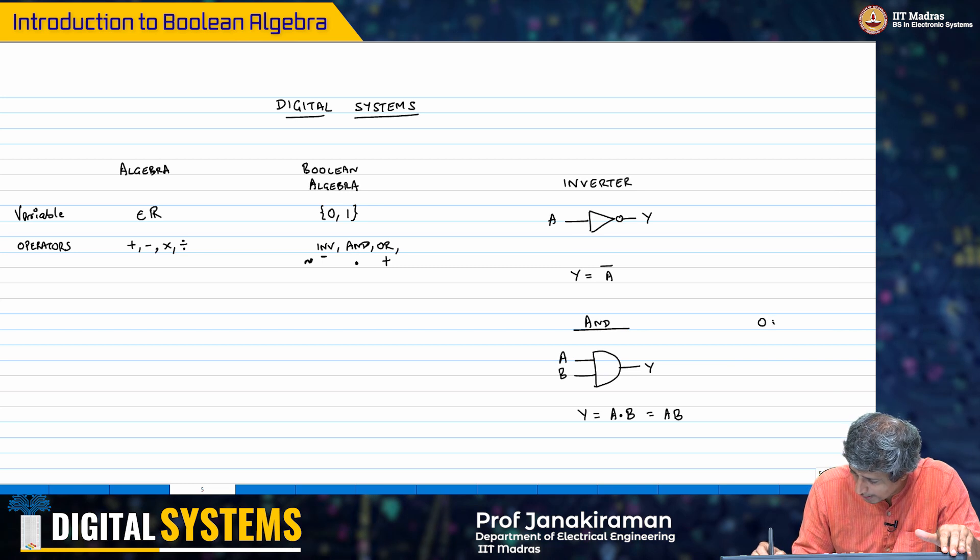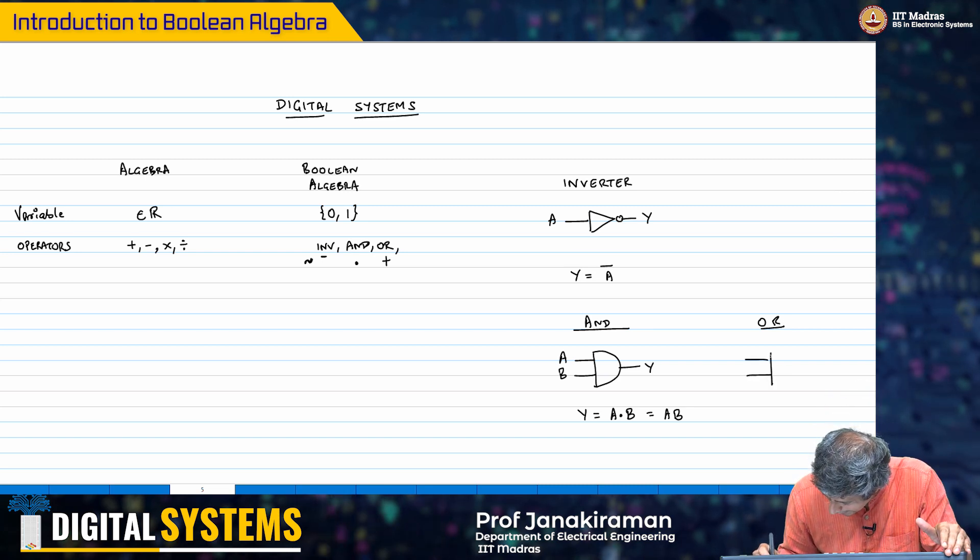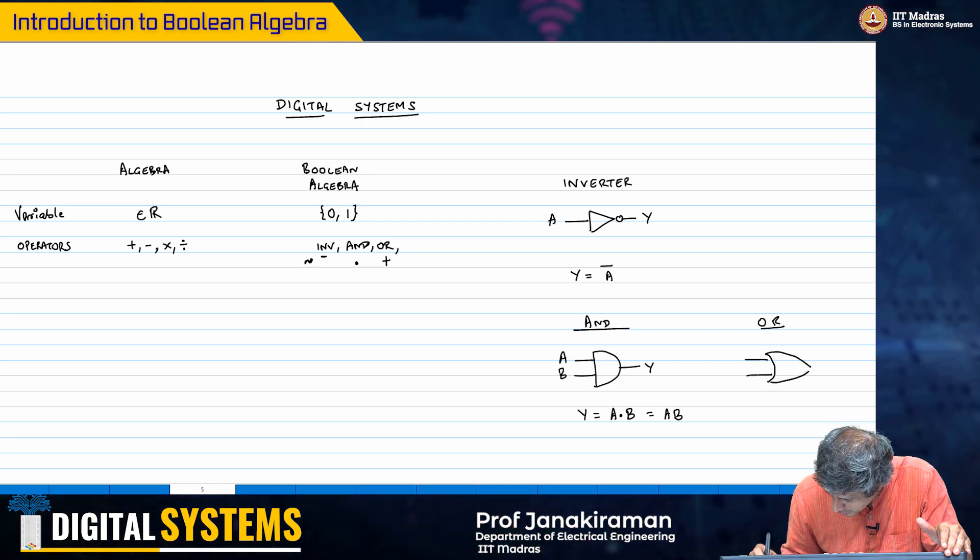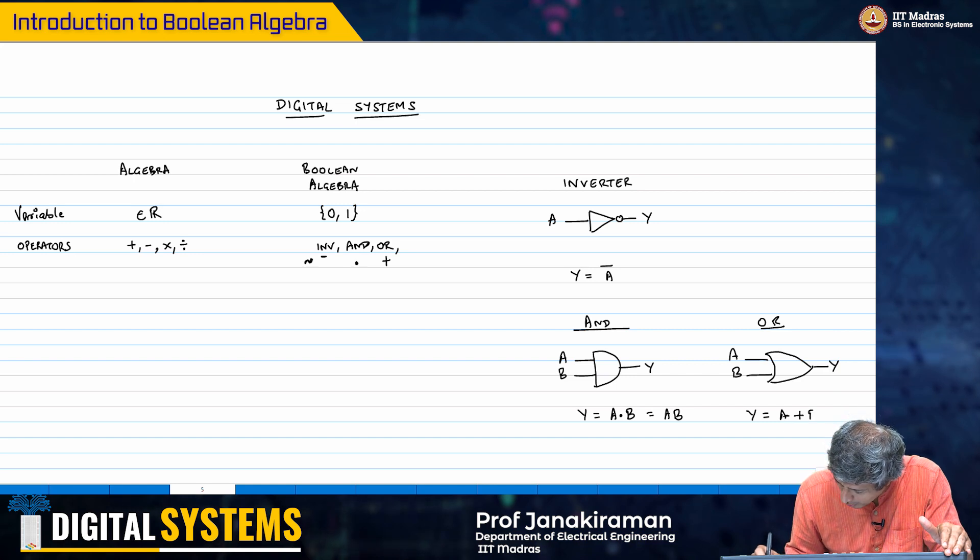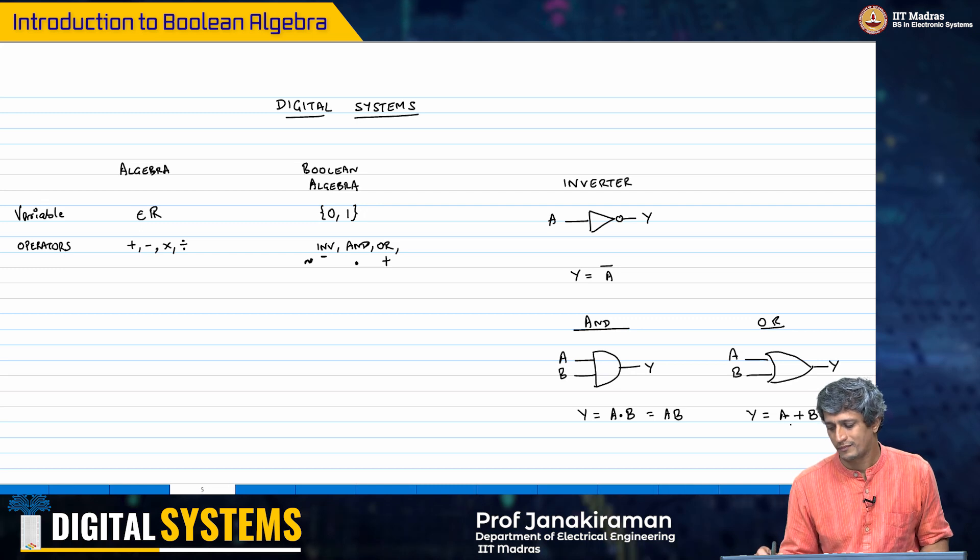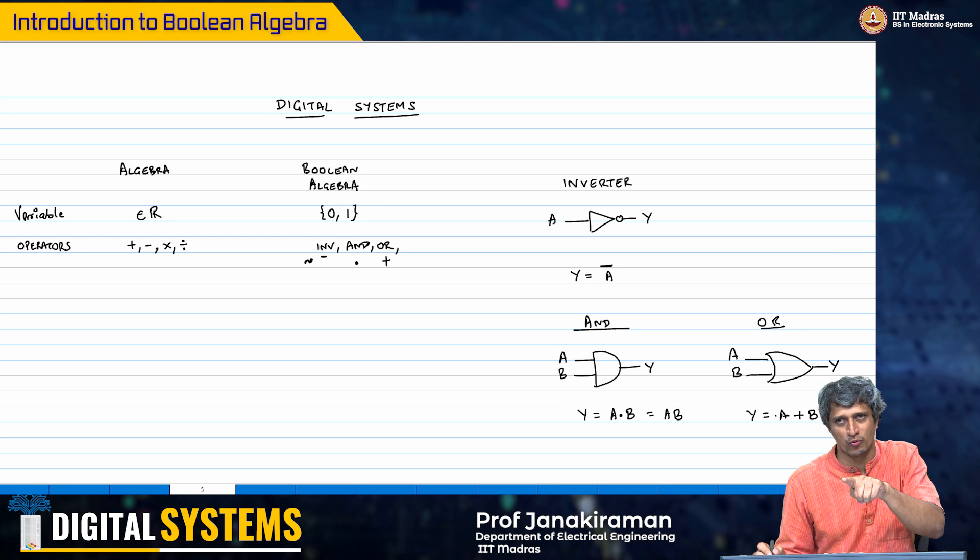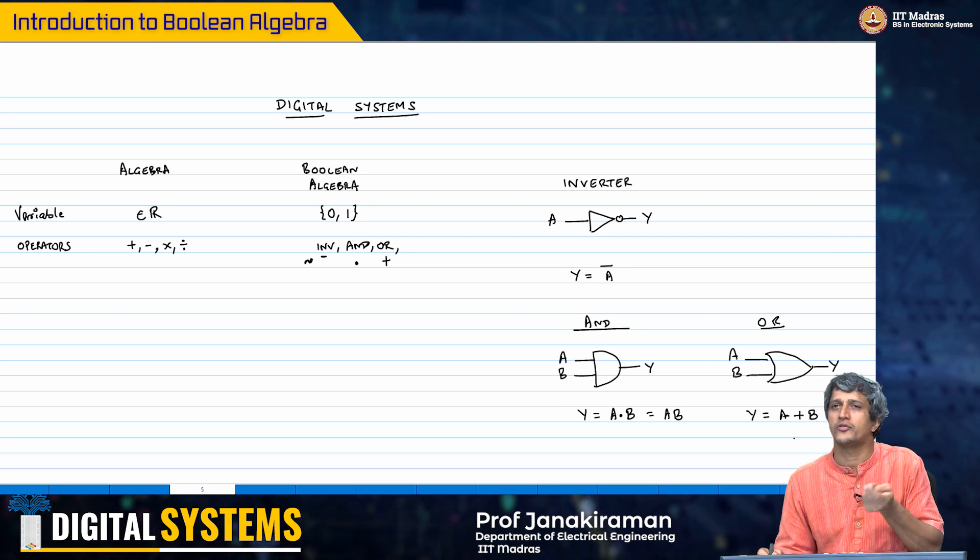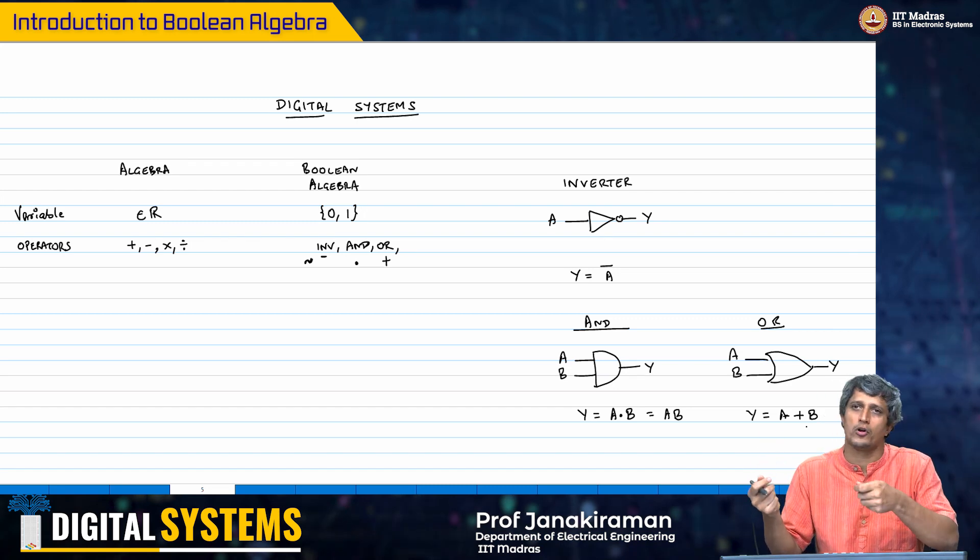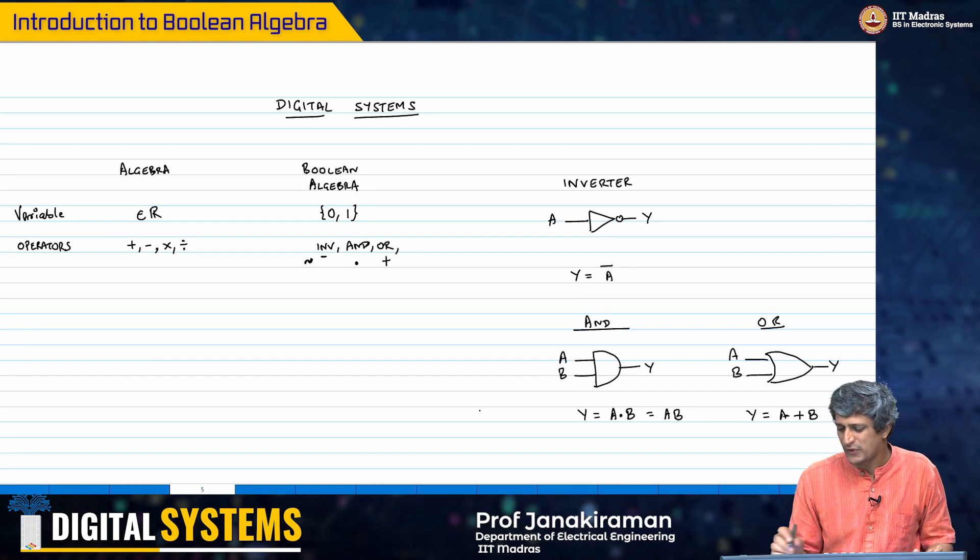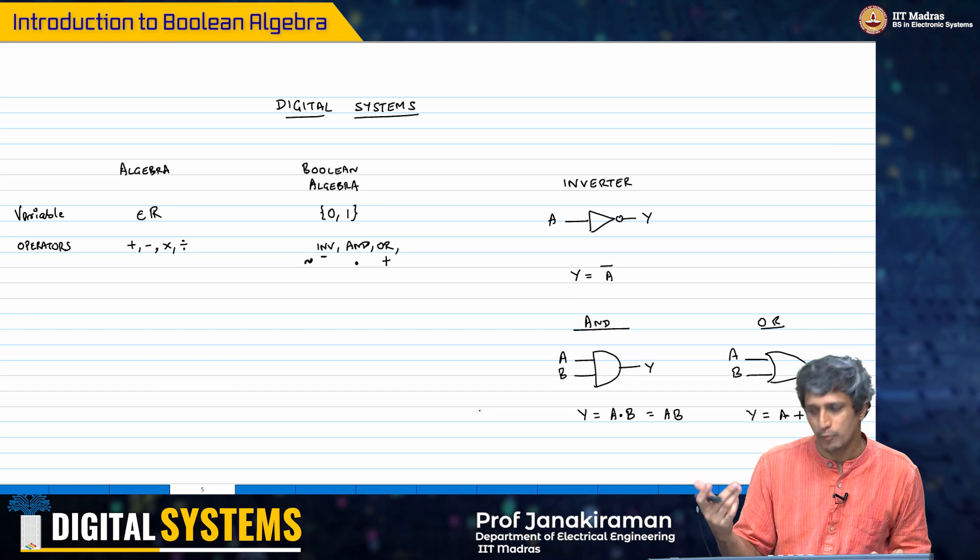The OR gate essentially deals with again two inputs a and b, and you say y equal to a or b. Again the plus is a very intuitive thing because it is an addition. If either a is 1 or b happens to be 1, the output will be 1. Of course, when both a and b are 1 we are talking about a special operation - it is not mathematical addition. We are talking about logical or, and therefore that is also a logical 1. These three operations are very intuitive and they form the fundamental building block of Boolean algebra and Boolean simplification.